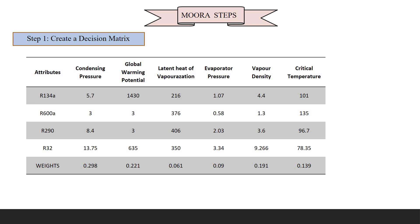Step 1 is to create the decision matrix using four alternatives — R134A, R600A, R290, and R32 — and six attributes: condensing pressure, global warming potential, latent heat of vaporization, evaporator pressure, vapor density, and critical temperature.